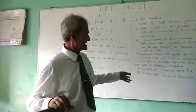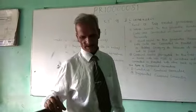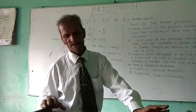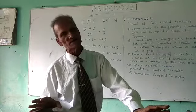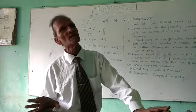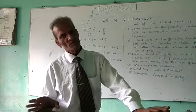In the differential compound generator, the field of the series winding works in the opposite direction of the field of the shunt winding. In this way, the resultant field will be minimum.